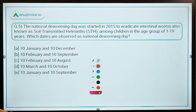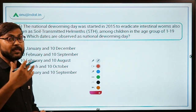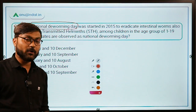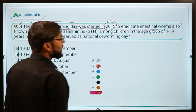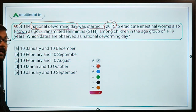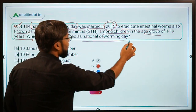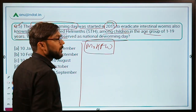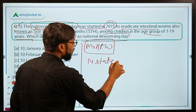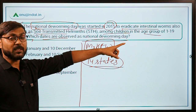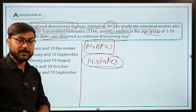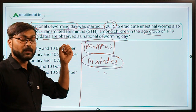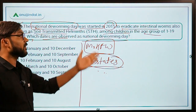Question number five is about a social issue: the National Deworming Day. This day was started in 2015 to eradicate intestinal worms, also known as soil-transmitted helminths, among children in the age group of 1 to 19 years. We are discussing this because the Ministry of Health and Family Welfare has recently stated that 14 states in our country have shown a decline in cases of intestinal worms among children.